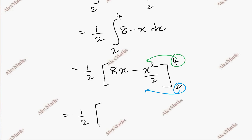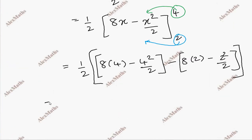1 by 2, bracket open, 8 into 4 minus 4 square by 2, minus for the lower limit, 8 into 2 minus 2 square by 2. Now for further simplification, 1 by 2. This is 32 minus 16 by 2, which is 8, so 32 minus 8. This is minus 16, so plus 2.